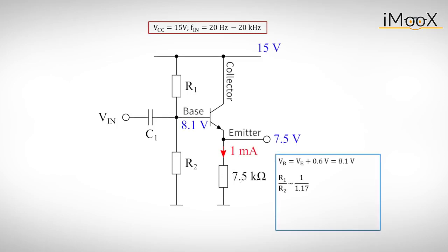For simplicity, we want to have 1 mA flowing at the output, so we need a 7.5 k resistor at the emitter. The voltage at the base will automatically be 0.6 volts higher than the one at the emitter, or 8.1 volts.